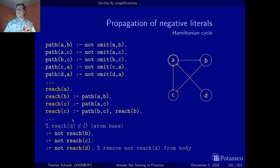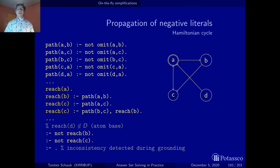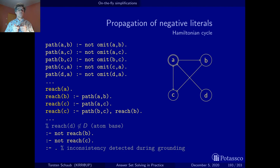Since reach(D) is false, not reach(D) is true. We can simplify the condition of the integrity constraint that says each node must be reachable. But now there are no conditions left, and an empty integrity constraint indicates an inconsistency. The grounder may stop and say: the problem is inconsistent. Don't bother the solver — I already solved your problem.